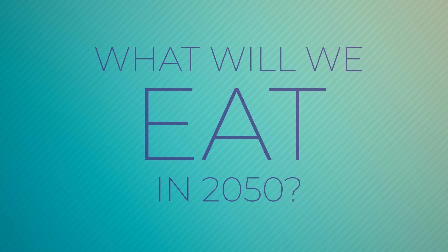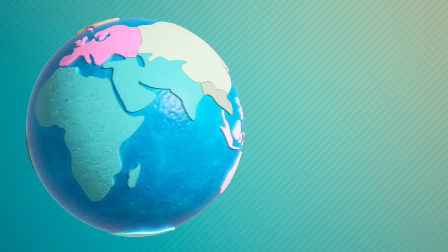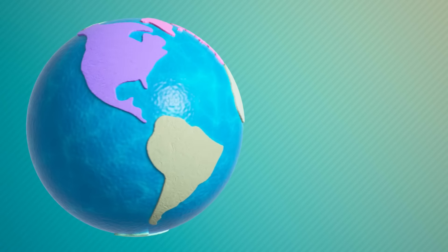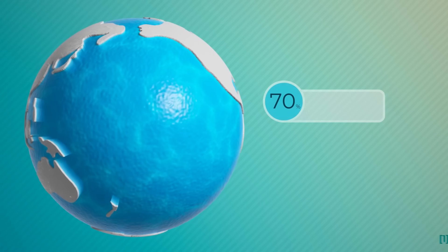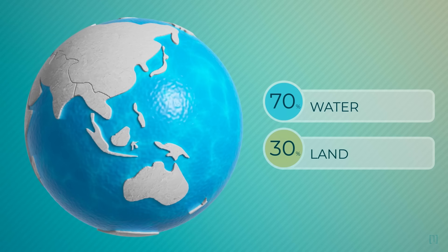First, let's have a look at how we currently use the Earth's surface. Let's reshuffle the land on Earth a bit to visualize this. About 70% of the surface consists of water. The remaining 30% is land.